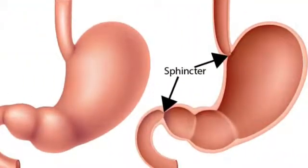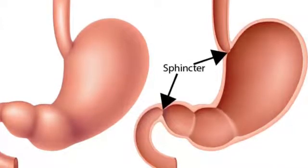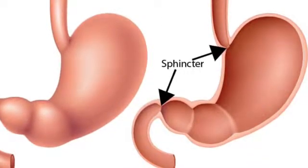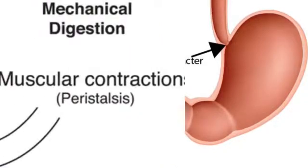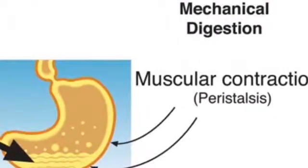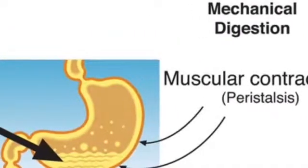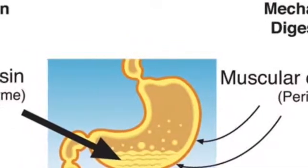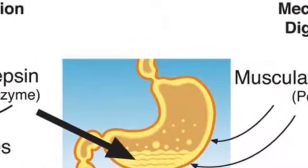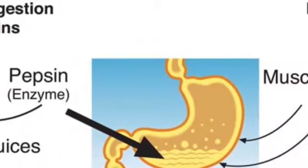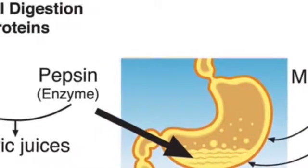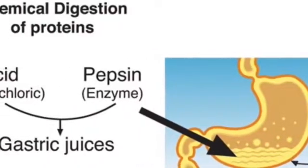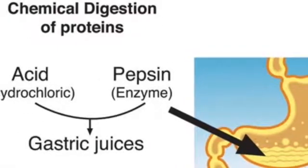A sphincter is an opening. There are two in the stomach — one at the top and one at the bottom. The mechanical digestion in the stomach is a mixing action, while the chemical digestion involves various enzymes like lipase, which breaks down fats, and pepsin, which breaks down protein, mixed with the chyme.